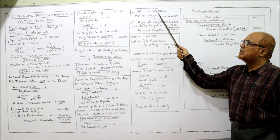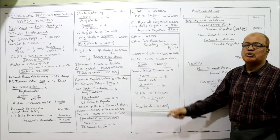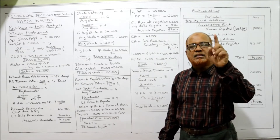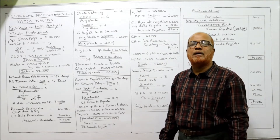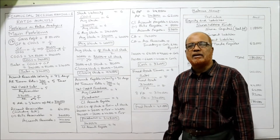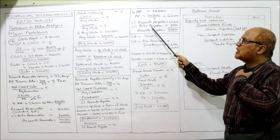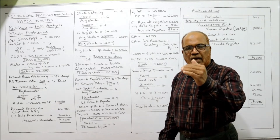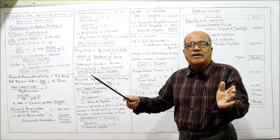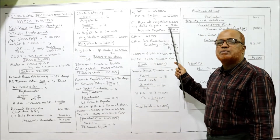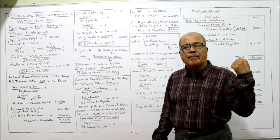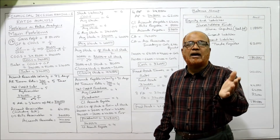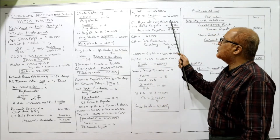Total accounts payable is ₹62,000, which includes bills payable of ₹5,000. So trade accounts payable = 62,000 − 5,000 = ₹57,000 and bills payable = ₹5,000 separately. However, for balance sheet purposes we add both together, showing total accounts payable as ₹62,000.